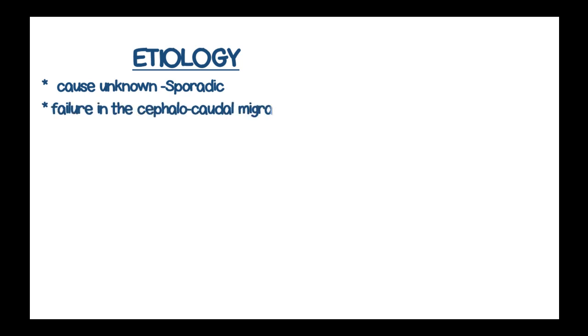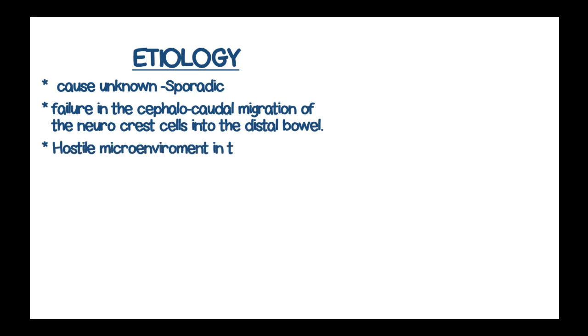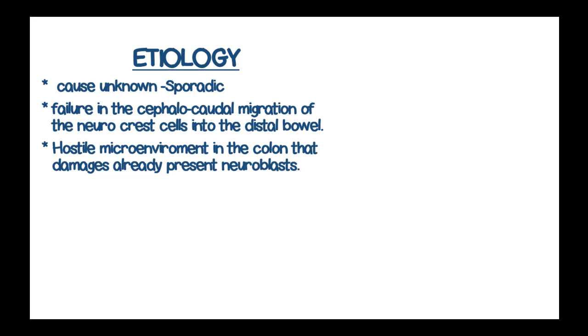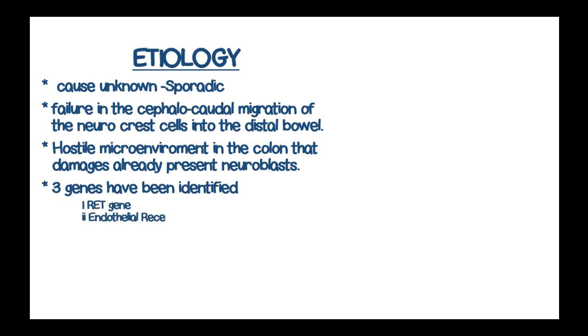The cause of this aganglionic megacolon is unknown. Two theories propose it is caused by a failure in the cephalocaudal migration of neural crest cells into the distal bowel during development, and that a hostile microenvironment in the colon can damage already present neuroblasts. Three genes have been identified linked to this condition: the RET gene, the endothelin receptor B gene on chromosome 13, and the endothelin 3 gene on chromosome 20.